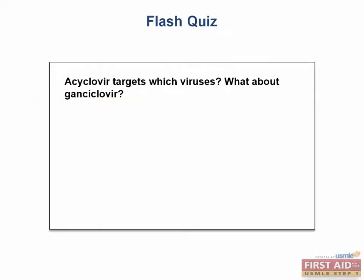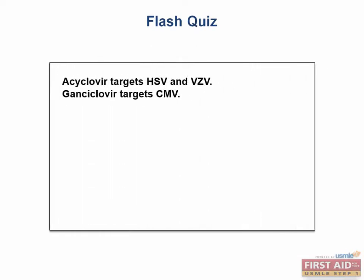Now it's time for a flash quiz. Acyclovir targets which viruses, and what about Ganciclovir? Acyclovir targets herpes simplex virus and varicella zoster virus, while Ganciclovir targets CMV. It's important to remember that acyclovir and Ganciclovir are both guanosine analogues that work by a very similar mechanism of action — the only difference is that they are activated by different kinases found in different viruses.